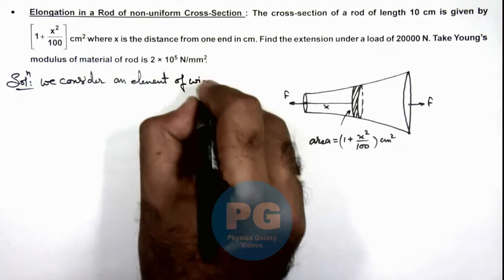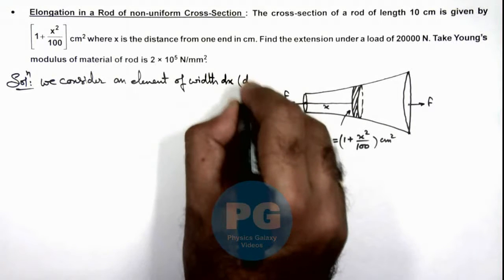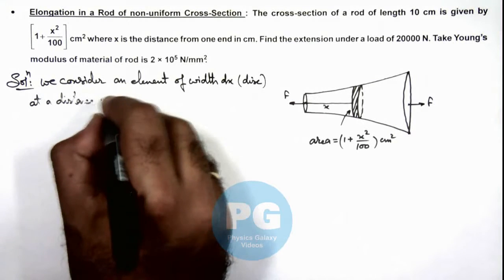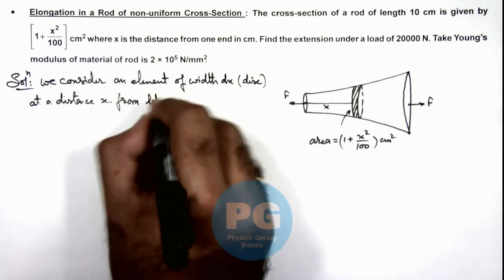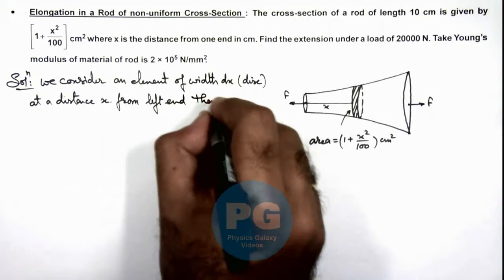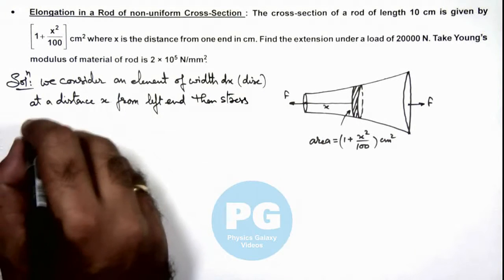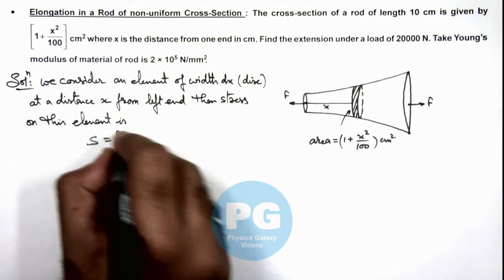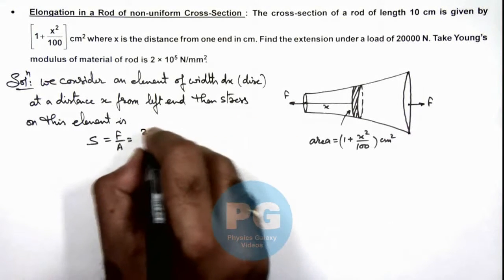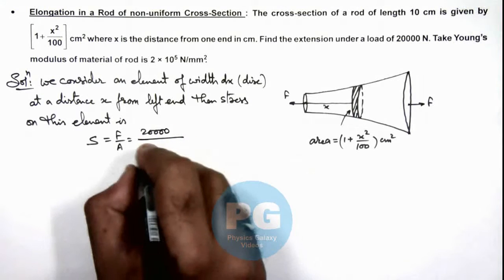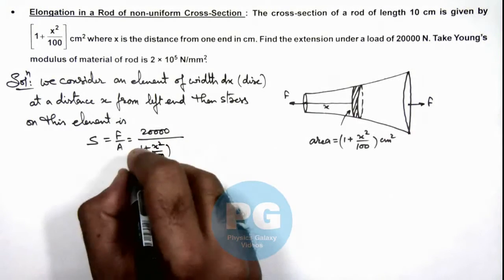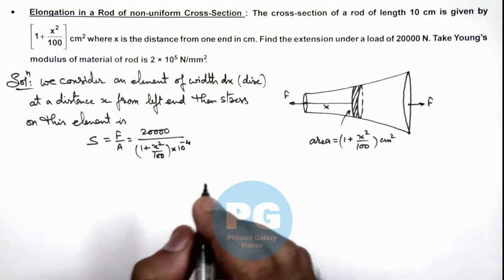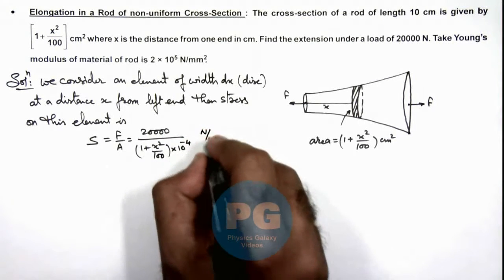An element of width dx. The element we are taking as a disc at a distance x from the left end. Then stress on this element is, this stress we can calculate as F by A, and in this situation the applied force is 20,000 Newton divided by the area is 1 plus x squared by 100, and as it is in centimeter squared we transform it in SI units so this is multiplied with 10 to power minus 4. This is the stress in Newton per meter squared we are getting.